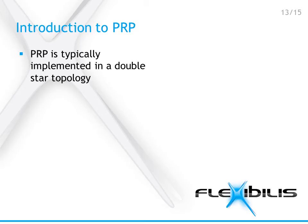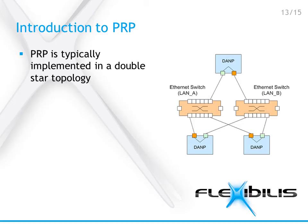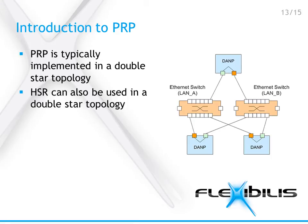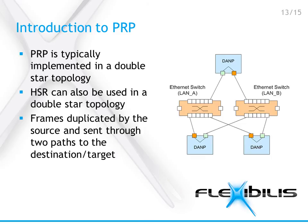PRP, on the other hand, is typically implemented in a double star topology, though HSR can also be used in this same topology. In double star, each node is connected to two separate parallel local area networks. As in HSR, the source node in PRP also sends two copies of each packet, one over each network. PRP requires that everything is doubled — the switches, the cables, and the data. HSR doesn't require as much cabling and doesn't need dedicated switches, so it's less expensive while still providing the same level of redundancy.